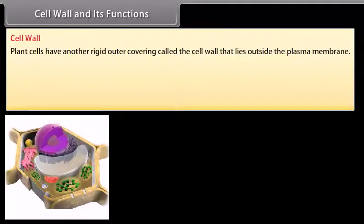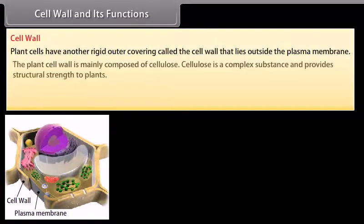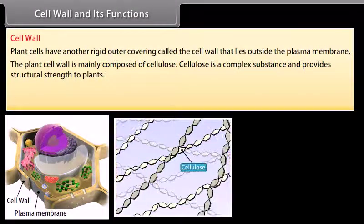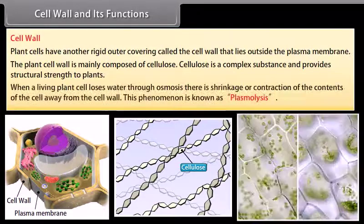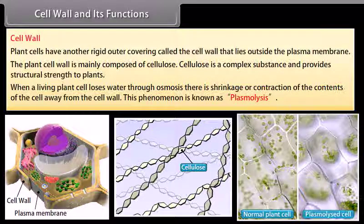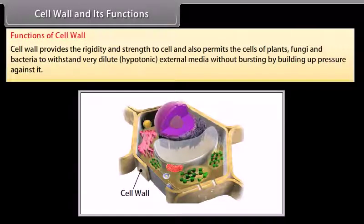Cell wall and its functions: plant cells have another rigid outer covering called the cell wall that lies outside the plasma membrane. The plant cell wall is mainly composed of cellulose, a complex substance that provides structural strength to plants. When a living plant cell loses water through osmosis, there is shrinkage or contraction of the contents of the cell away from the cell wall — this phenomenon is known as plasmolysis. The cell wall provides rigidity and strength to the cell, and also permits cells of plants, fungi, and bacteria to withstand very dilute hypotonic external media without bursting.